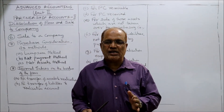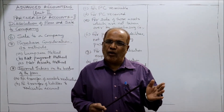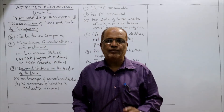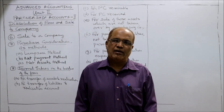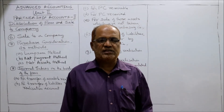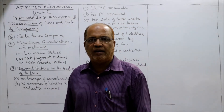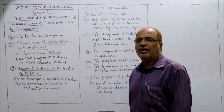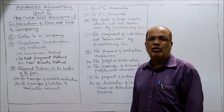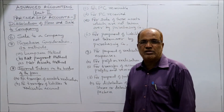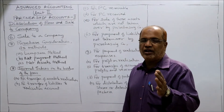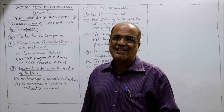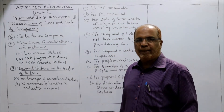These are the entries to be passed when a partnership firm is sold to a company. The entries are almost similar to those on dissolution of a firm. You must remember not only the entries but also the sequence — which entry comes first and which comes next.